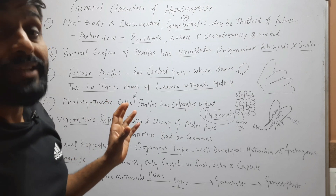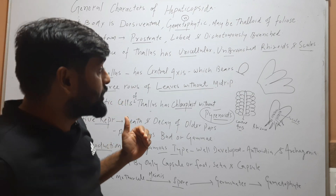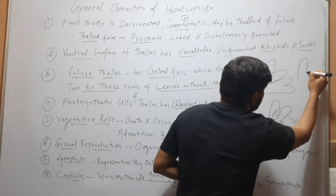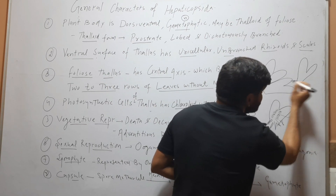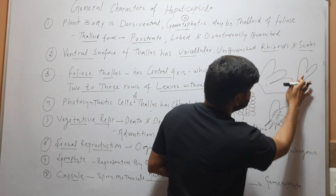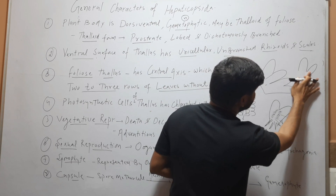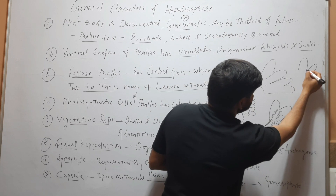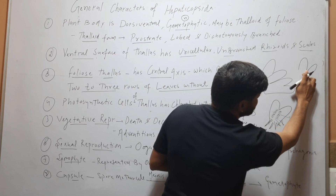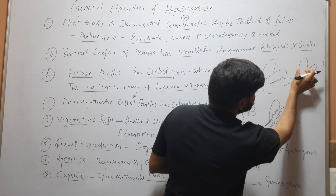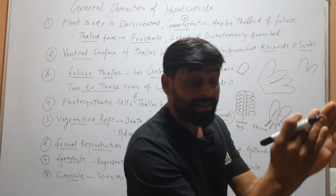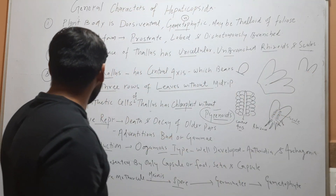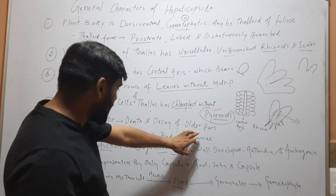Vegetative reproduction occurs through the death and decay of older parts. For example, suppose this is a thallus body — if this part decays and the decaying process reaches the dichotomy, the two fragments will separate, and each will form a new thallus. So vegetative reproduction occurs through death and decay of older parts.